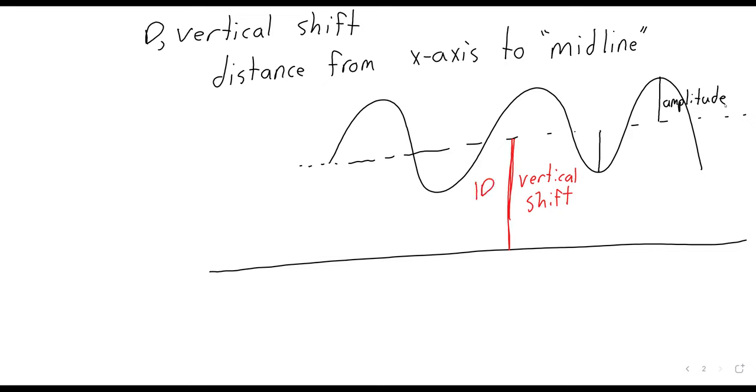this vertical shift is going to be the distance between the x-axis and that midline. And this distance is going to be d. I'll put d in absolute value, because if d is negative, that can happen. If d is negative, that means the graph is pushed downwards. We can't have a negative distance, though. So if we're defining d as being a distance, we need an absolute value sign around it.